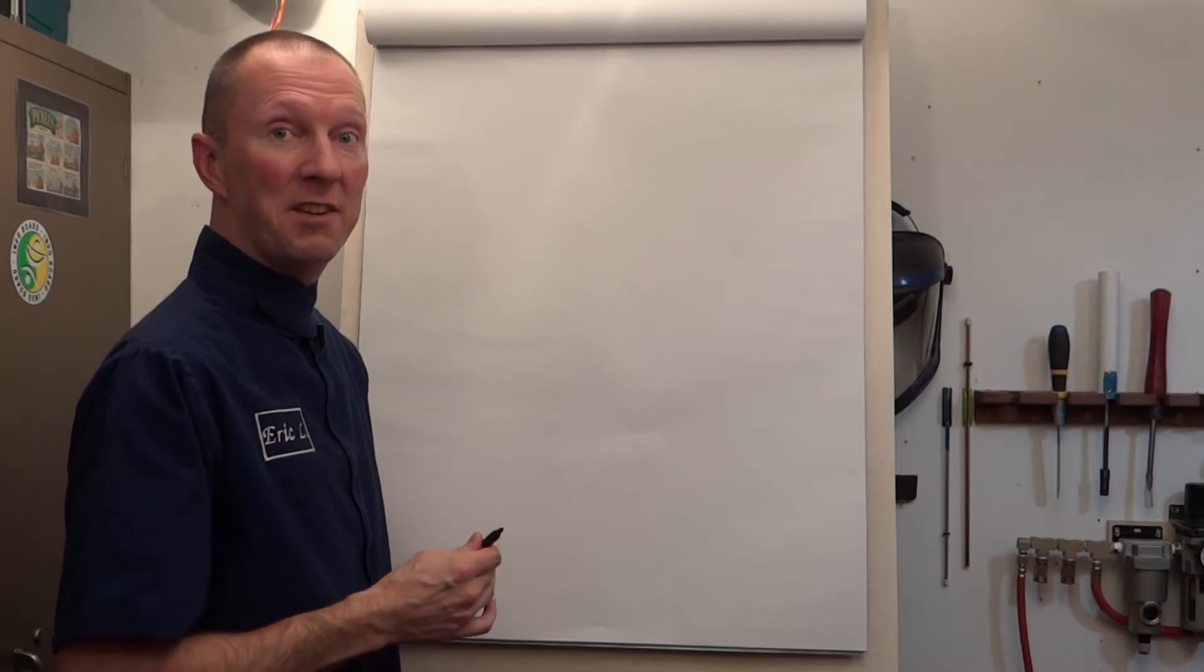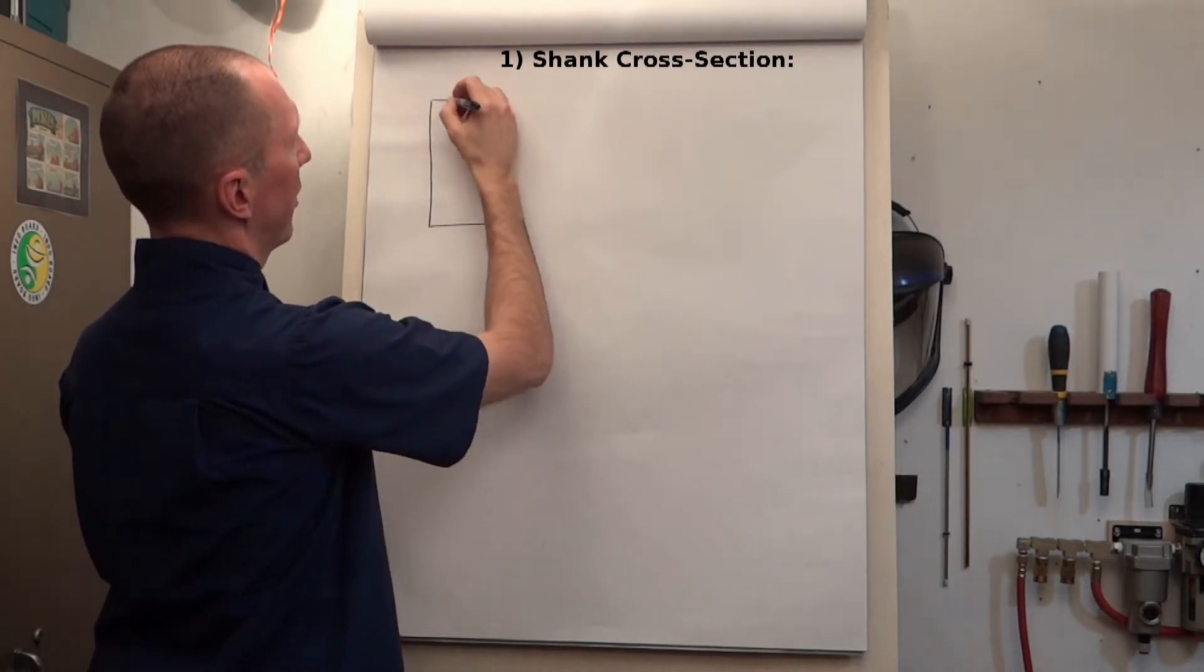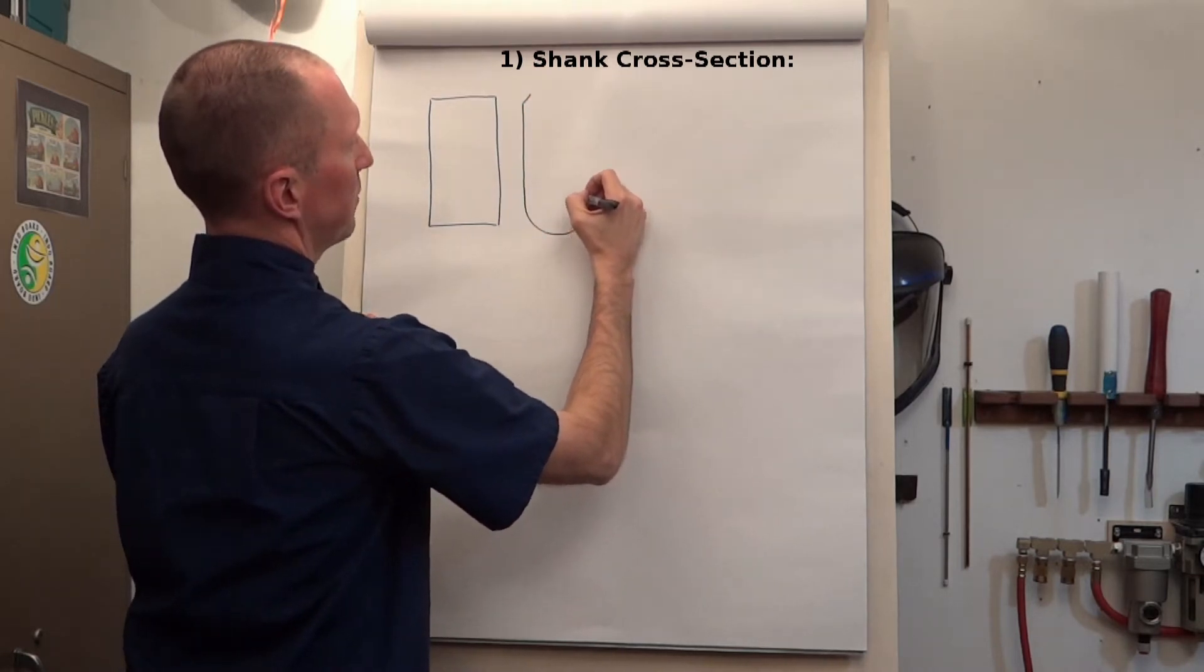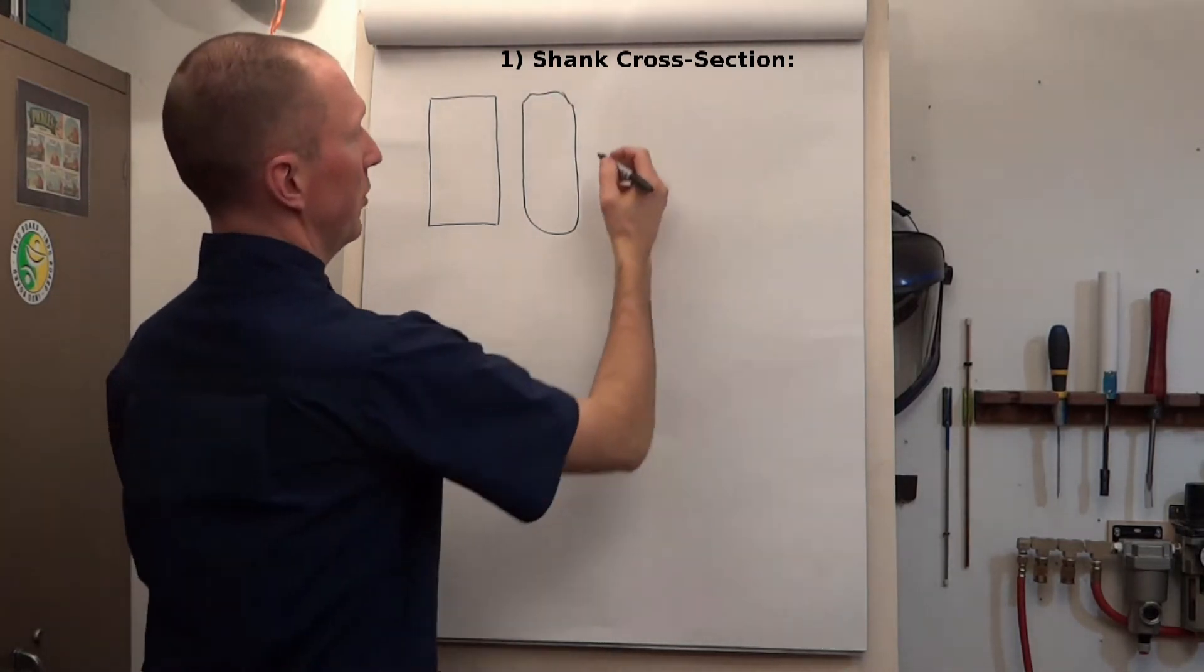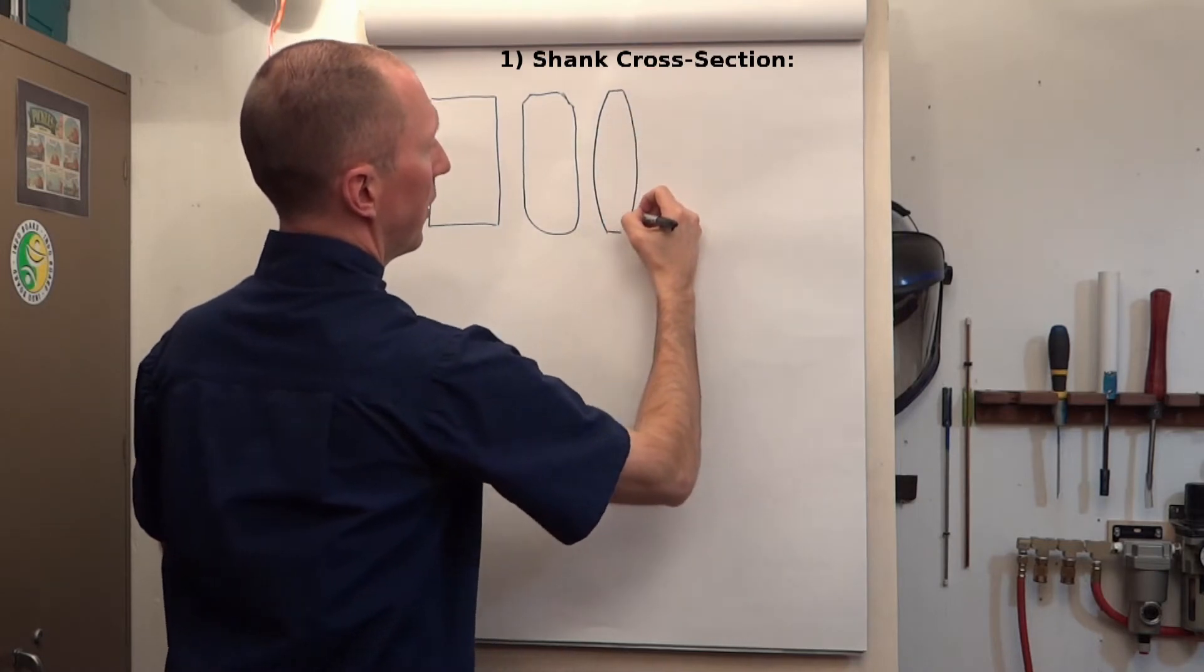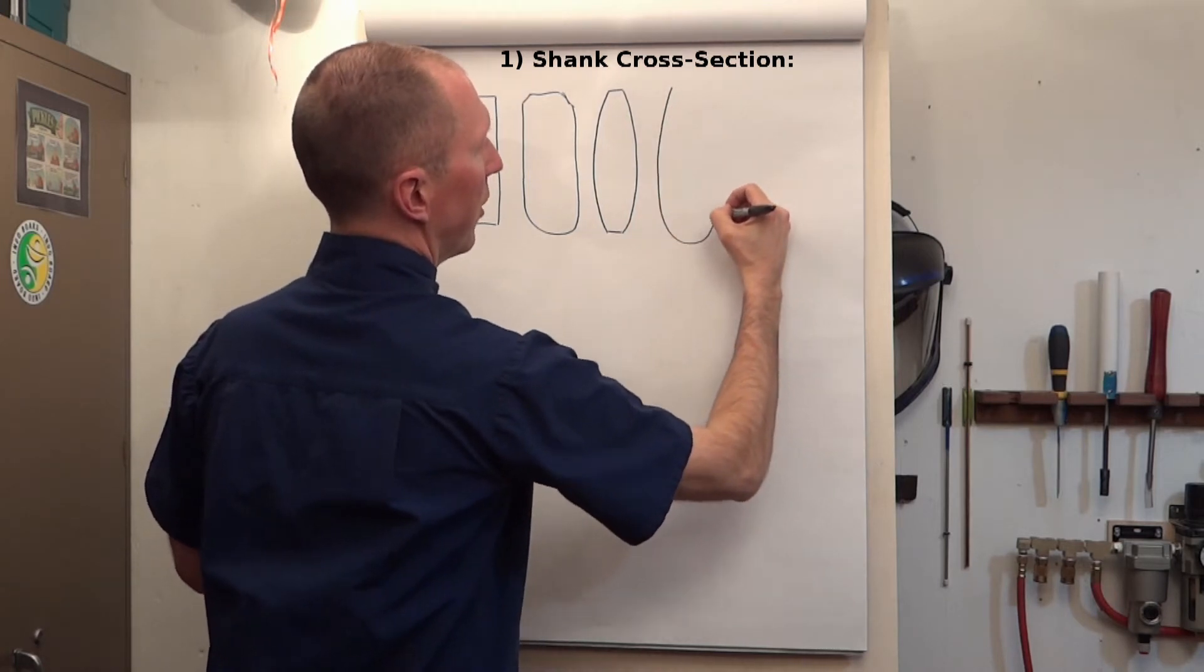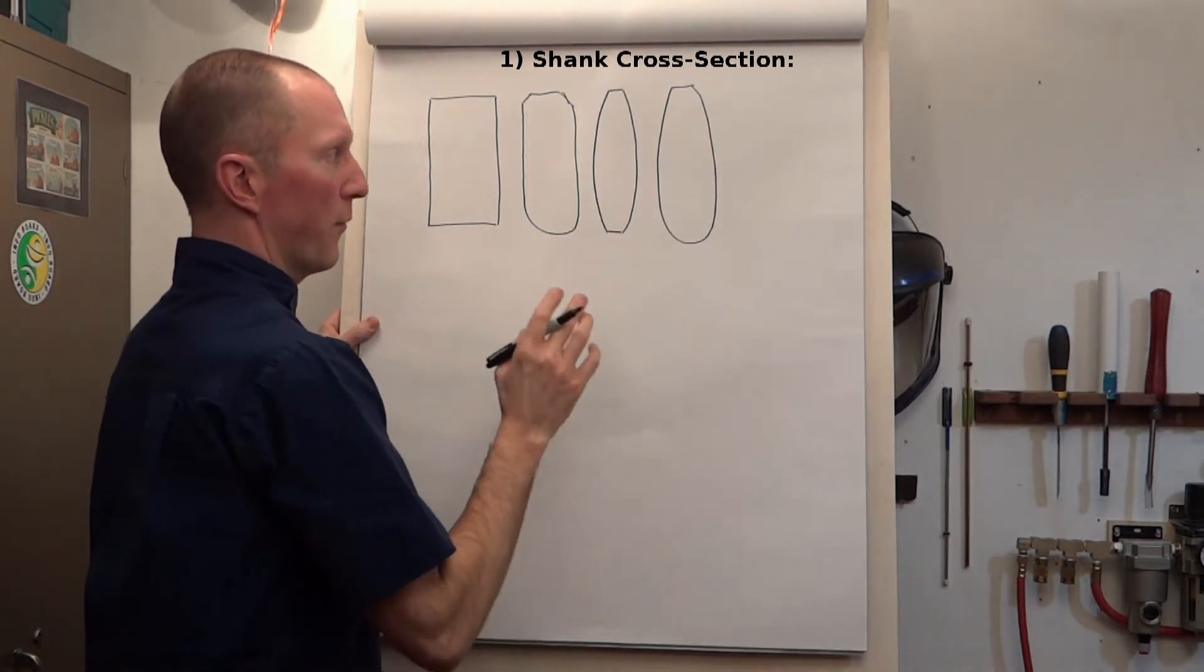First variable: shank cross-section. I'm going to simplify this a little bit. There's a lot of different variations on each design within each variable, so we'll keep it simple. First shape: more traditional, a rectangular shank cross-section. Second shape: a variation, but pretty common, chamfered edges, a radius bottom and a flat top. Third configuration is an oval skew with flat top, flat bottom, and a nice even curve. Fourth configuration is a variation on this, but pretty common as well—an oval skew where the belly of the curve goes right into this radius lower edge. And the fifth configuration is a round shank.